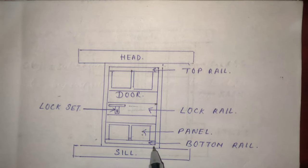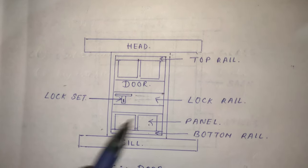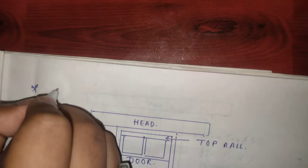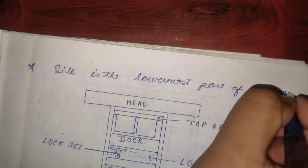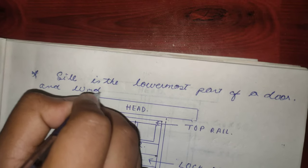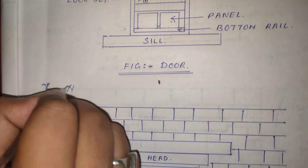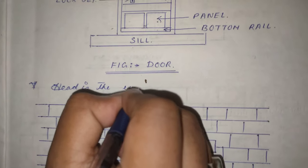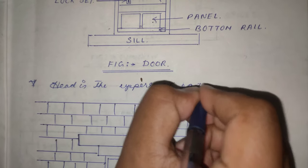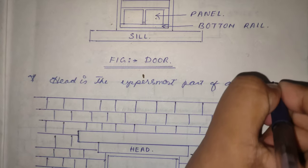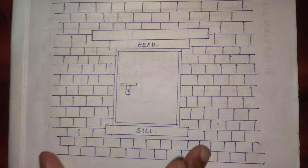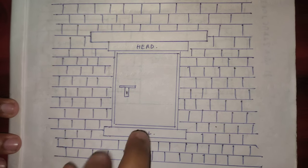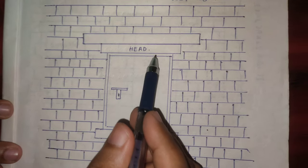these are panels, this is the bottom rail, this is the top rail. Just remember that sill is the lowermost part of a door and window. So this is the wall, these are bricks, and this is the door, a normal door. The head is already there, the sill is already there.